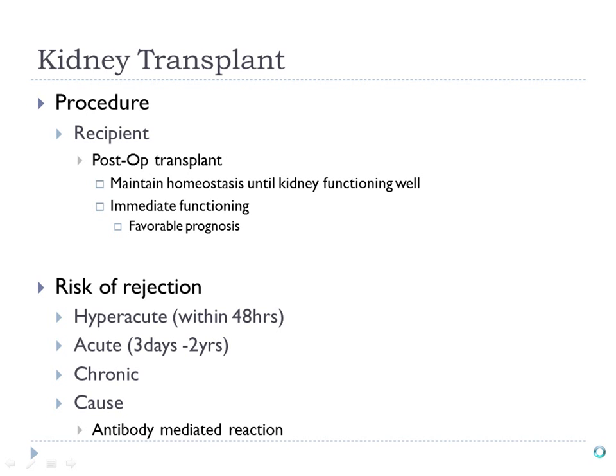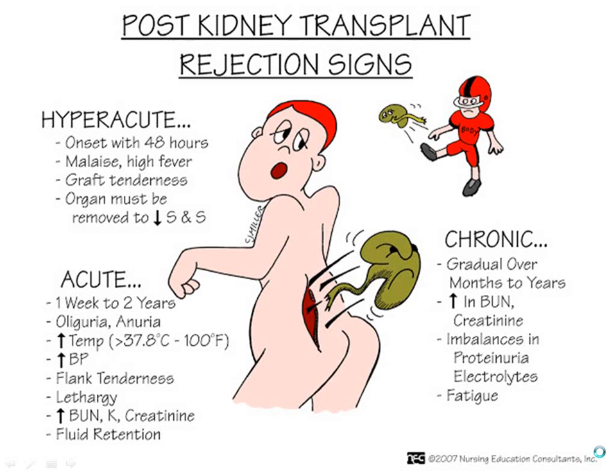Hyperacute happens very quickly; acute happens over a longer period of time; chronic happens after several years of receiving the kidney transplant. The body attacks the kidney, sees it as foreign, creates antibodies against it, and those antibodies infiltrate the kidney causing thrombosis and fibrous tissue to fill it, leading to failure.